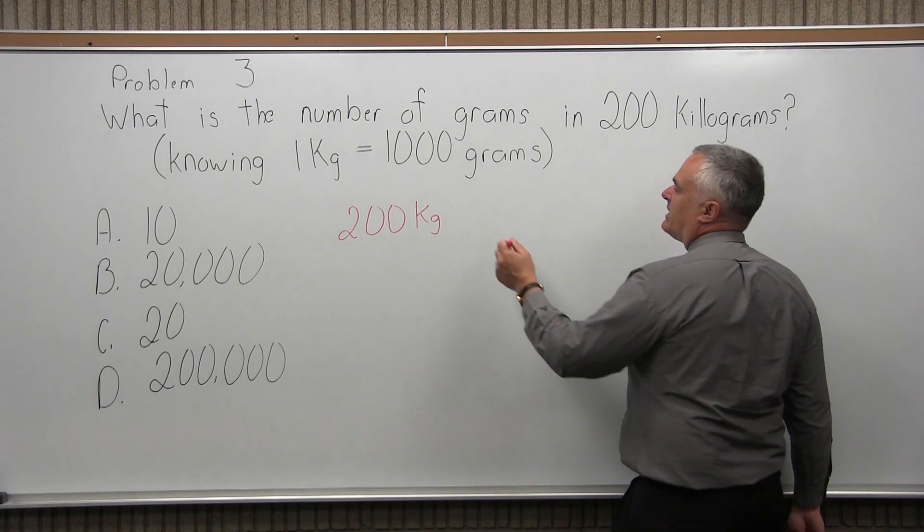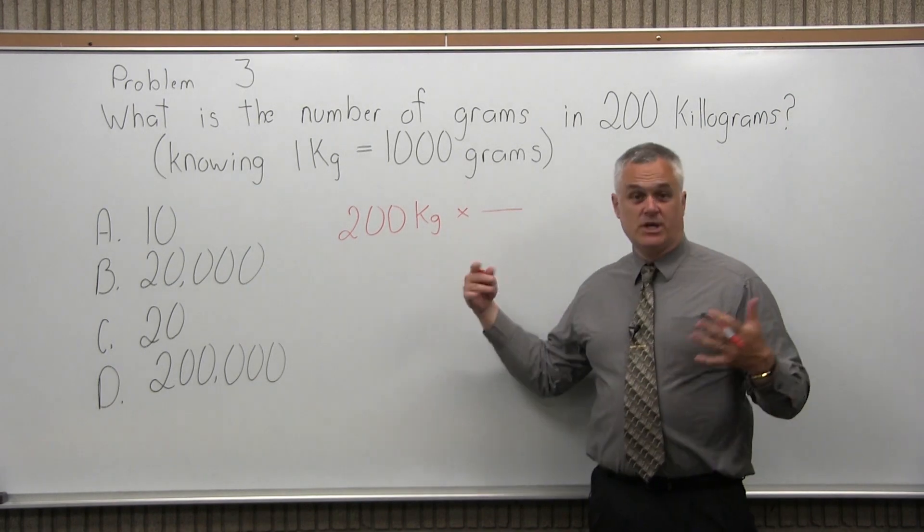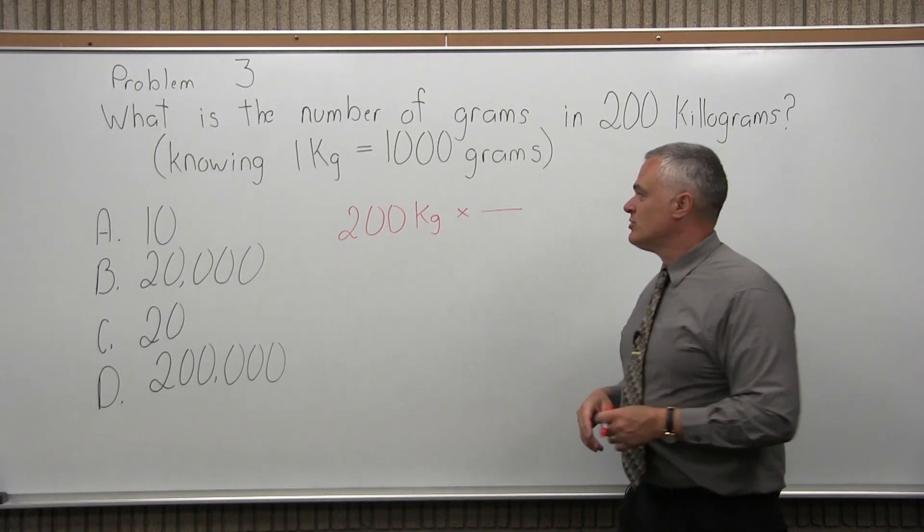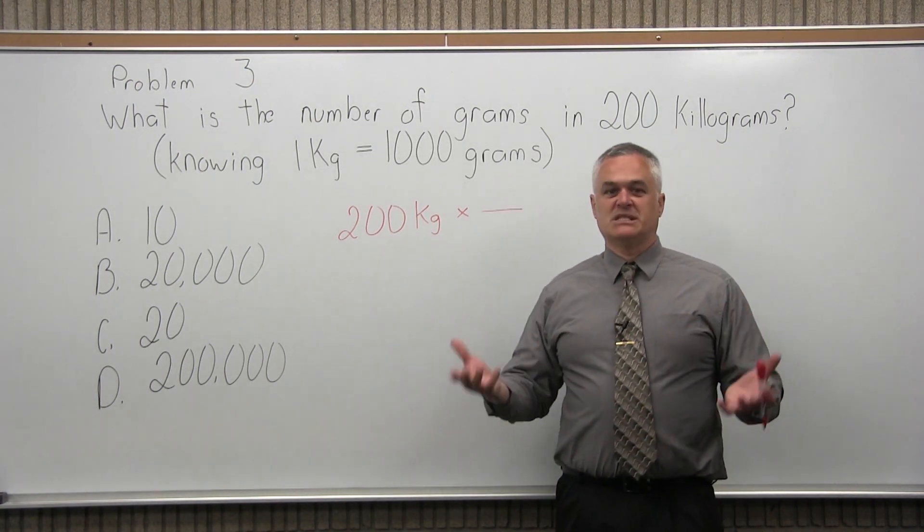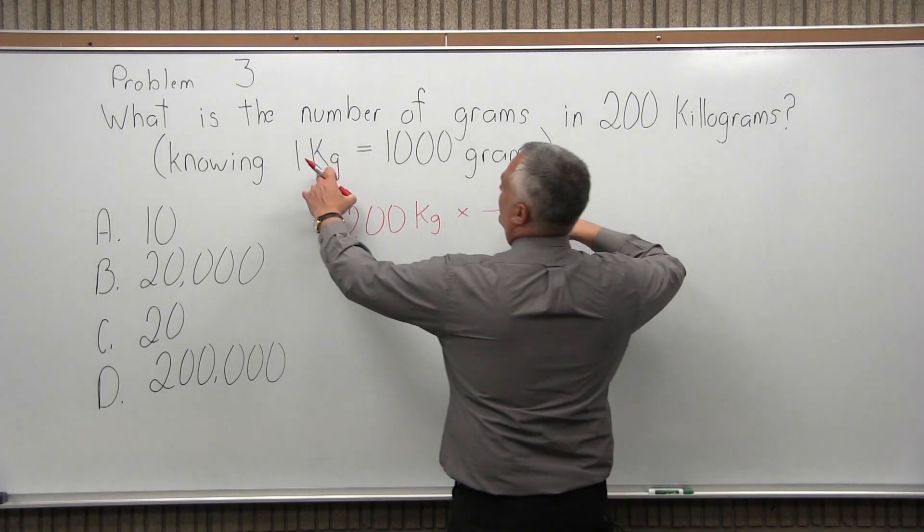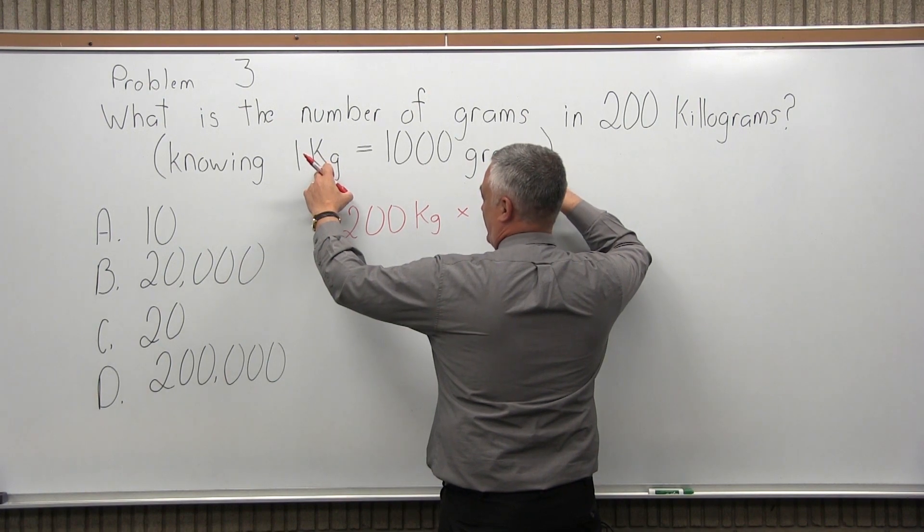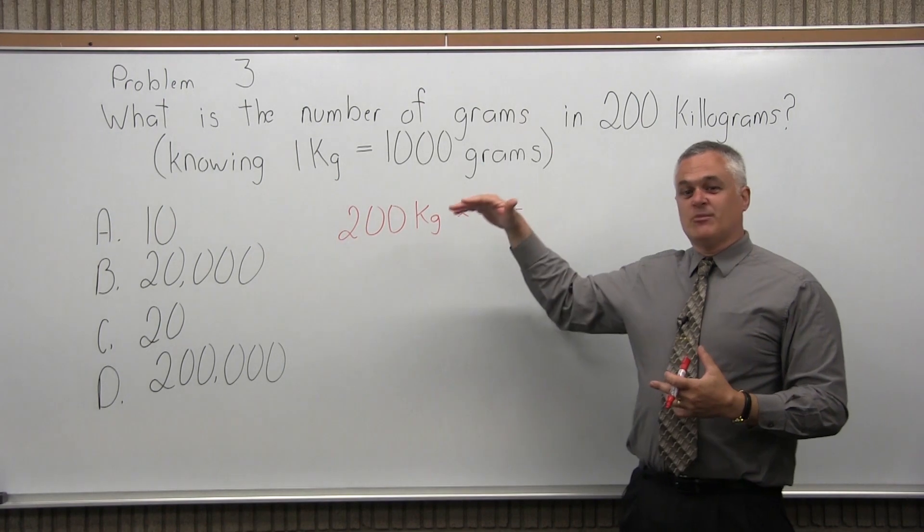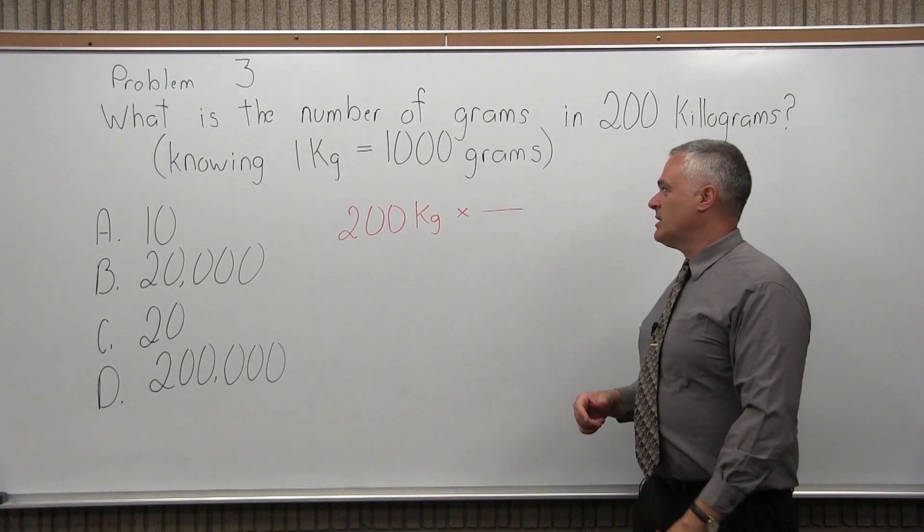And I'm going to multiply that essentially by a funny looking number 1. Anything times 1 doesn't change. The thing is, I'm not just going to write a 1, it's an unusual 1. The same amount over itself always reduces to 1, like 7 over 7 reduces to 1, 32 over 32 reduces to 1. Well, 1 kilogram is equal to 1,000 grams. So I'm either going to put 1 kilogram over 1,000 grams or 1,000 grams over 1 kilogram. You're going to have the same amount over itself, it's equal to 1, you're multiplying times 1. You're not going to change the amount.